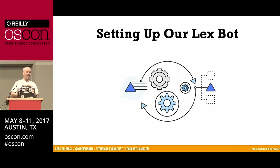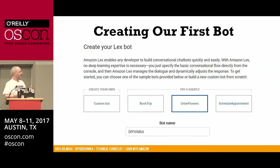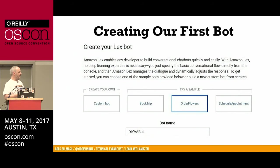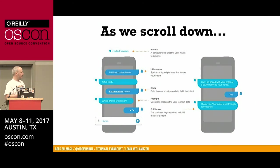Now it is time to set up our Lex bot. We go back to the AWS console and over to Amazon Lex. We'll get started and create that Order Flowers routine — that's a basic template they have. You can get it automatically built into your bot just to explore it; you don't have to keep it. We'll give it a name, and as we scroll down that page it'll show us how the Order Flowers bot is structured, which we'll go through as we set up your bot.